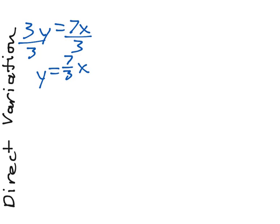So, in a raw equation, we need to be able to simplify or solve our equation for y to see if we have direct variation. If we start out with the equation 3y equals 7x, solve this for y, divide both sides by 3, get y equals 7/3 x, this is direct variation.